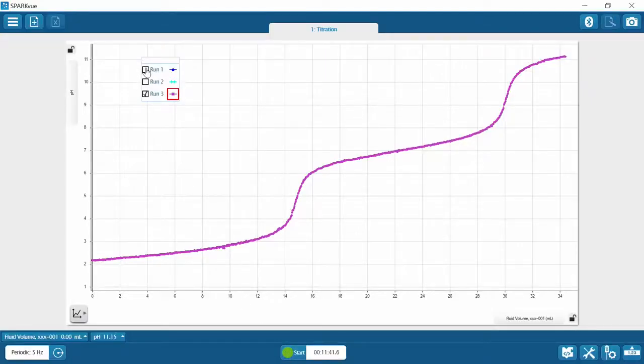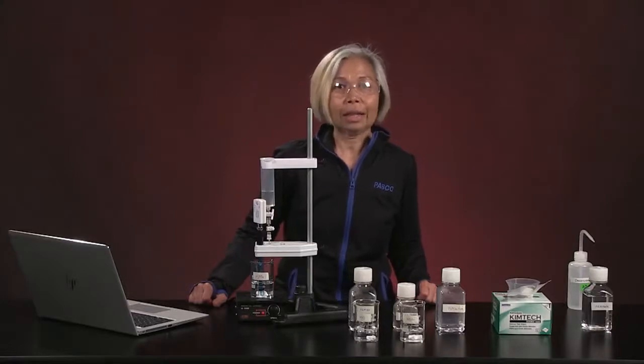Let's pull up all of our three curves. That's hydrochloric acid, that is acetic acid, and this is phosphoric acid. Now we are ready to do our analysis.